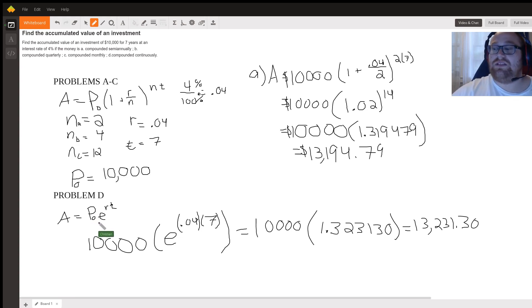Again, we have 10,000 times the exponential function raised to 0.04, again this is where we got the interest rate, times 7. So we have 10,000 times 1.323130, and when you multiply these two out you get $13,231.30.